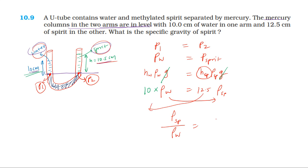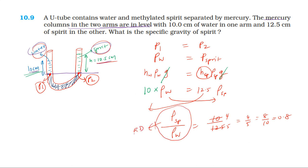So density of spirit divided by density of water equals 10 divided by 12.5, which equals 8 divided by 10, which equals 0.8. Therefore, the specific gravity — that is, the relative density — of the spirit is 0.8. Since it is a relative density, it has no unit.